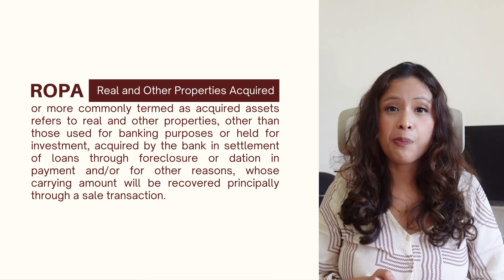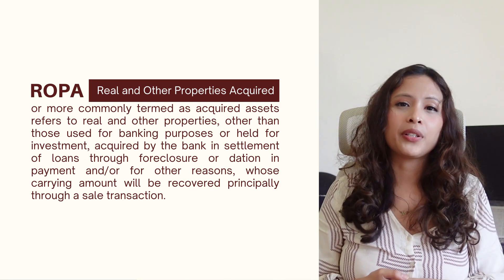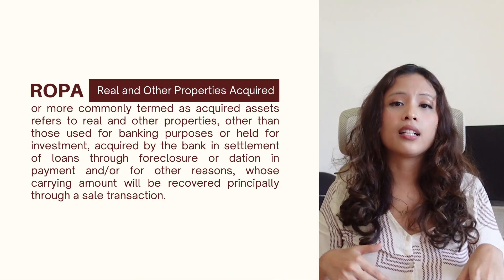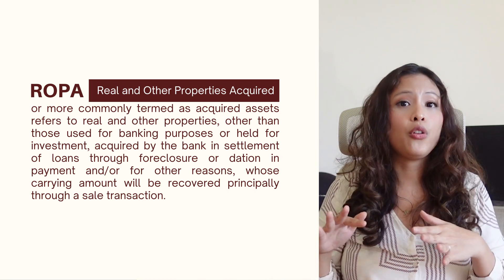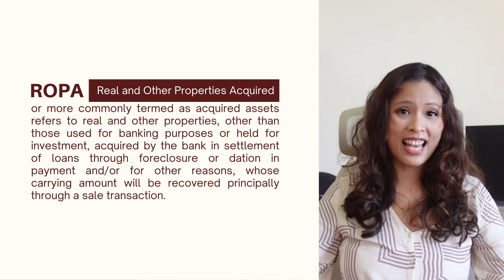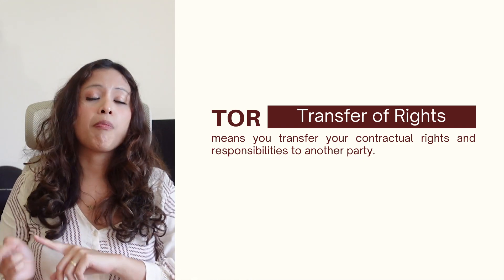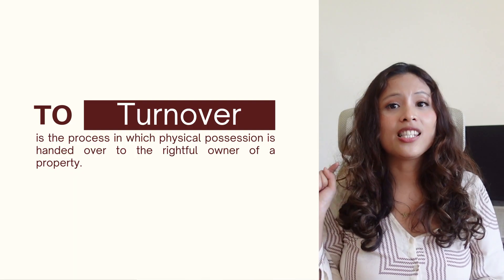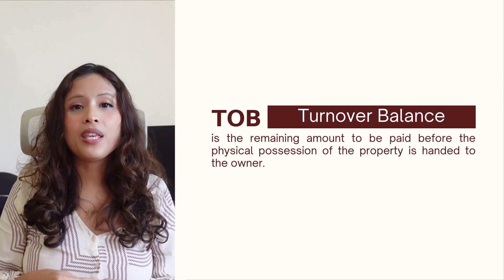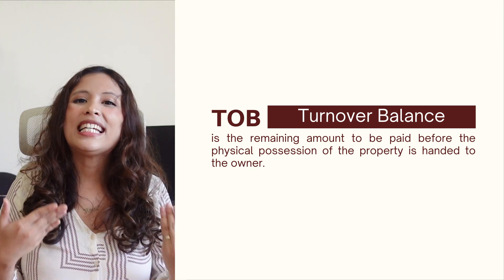ROPA, for Real and Other Properties Acquired, or more commonly termed as Acquired Assets, refers to real and other properties other than those used for banking purposes or held for investment, acquired by the bank in settlement of loans through foreclosure or dation in payment and other reasons, whose carrying amount will be recovered principally through a sale transaction. TOR, for Transfer of Rights, means you transfer your contractual rights and responsibilities to another party. TO, for Turnover, is the process in which physical possession is handed over to the rightful owner of a property. TOB, for Turnover Balance, is the remaining amount to be paid before the physical possession of the property is handed to the owner.